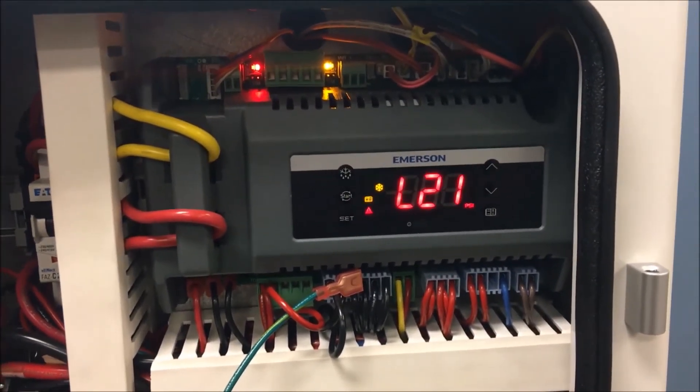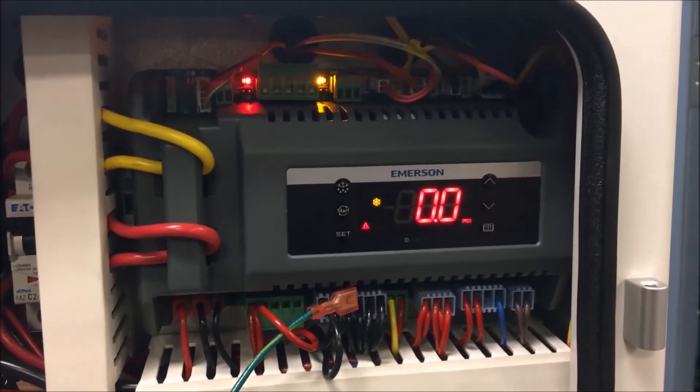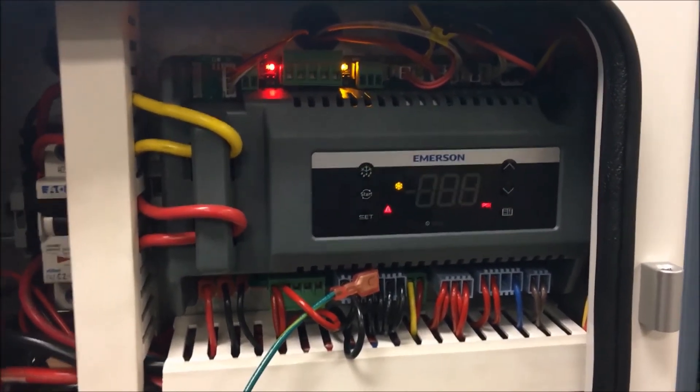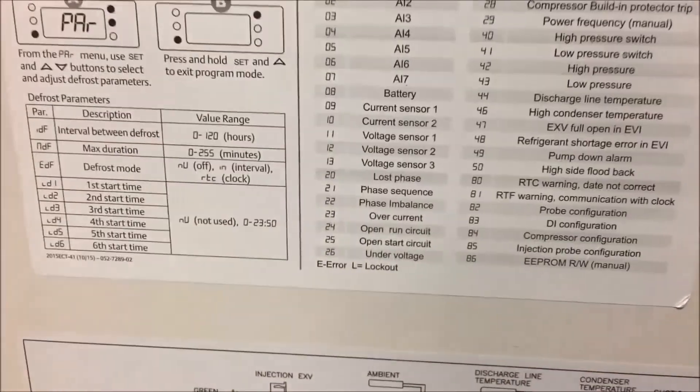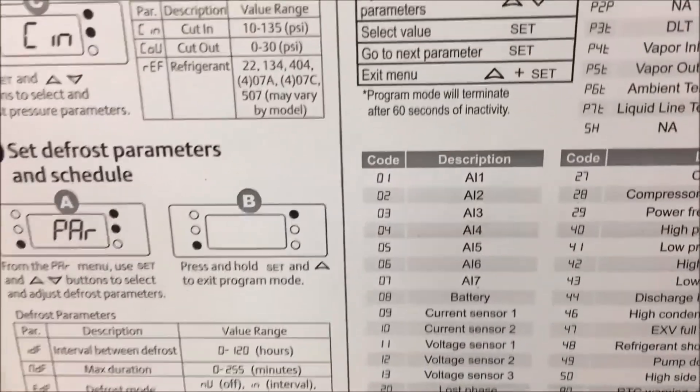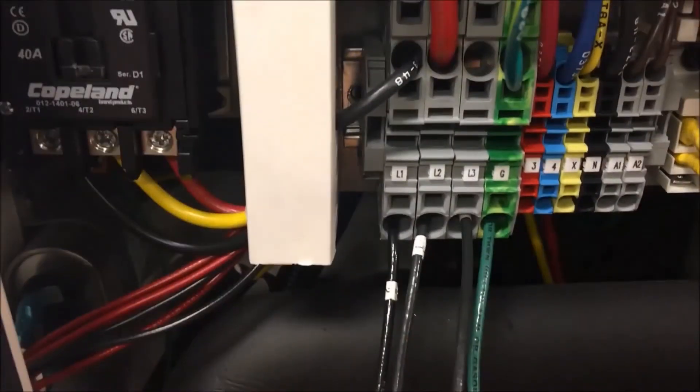As you can see here, it's flashing in an alarm code. This L21 means that the phases of the power are reversed. If you look on the door panel, you'll see that L21 means that the phases are reversed. So all we need to do is go ahead and switch these wires around.